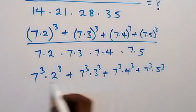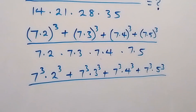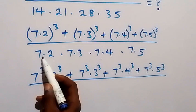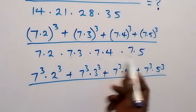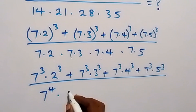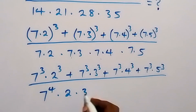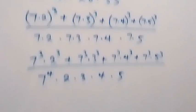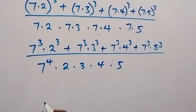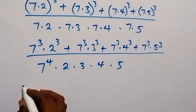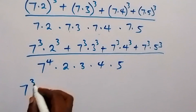Then divided by what we have here — we have all these numbers multiplied, and we have 7 in 4 places, so that's 7 raised to the power 4, times 2 times 3 times 4 times 5. Up in the numerator we have 7 cubed.